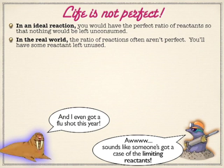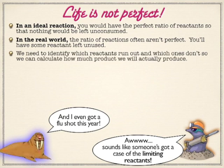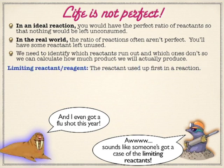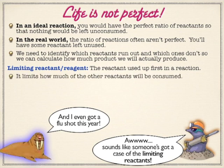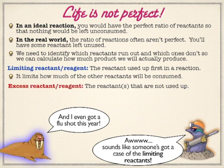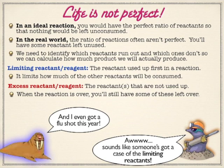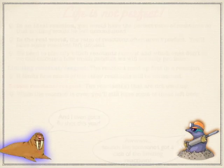These problems are easy to identify because they give you information about more than one reactant. In this scenario, something is going to run out first — that's called the limiting reactant. And then you're going to have something left over; those are called the excess reactants or reagents. You can end up with a stoichiometrically perfect amount of all reactants so nothing is left over, and that might be your goal if you don't want waste. But in the real world, when you burn or react something, something's going to run out and there's going to be other stuff left.